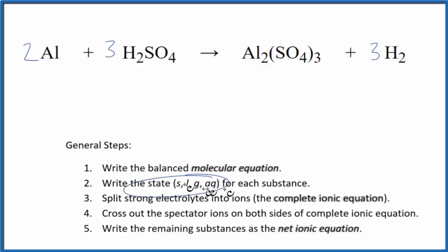Next, we'll write the state for each substance. Aluminum, that's a metal, it's just going to be a solid. Sulfuric acid, that's a strong acid. It's a strong electrolyte, and it's going to dissolve in water and break apart into ions. We call that aqueous.